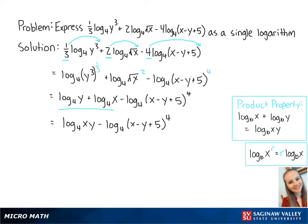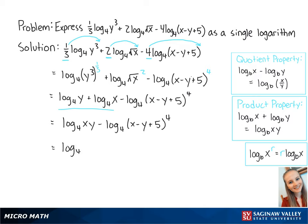Finally, we're going to use the quotient property to combine the remaining logs. So this becomes the log base 4 of x times y over x minus y plus 5 to the 4th power. This is the final answer.